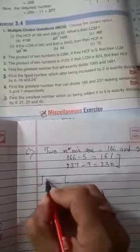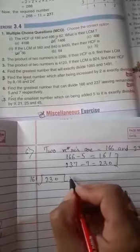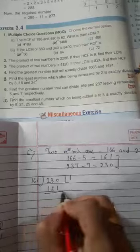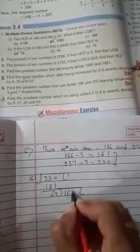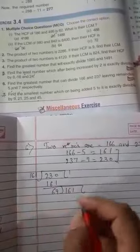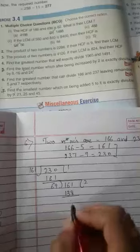230 is the greatest, then 161. Write 161 outside, 230 inside. 161 ones are 161. When we subtract, we get 69. Then again, 161 inside, 69 twos are 138.